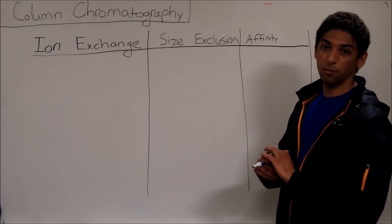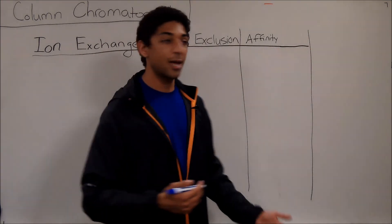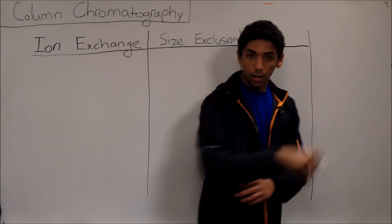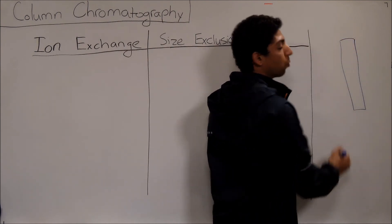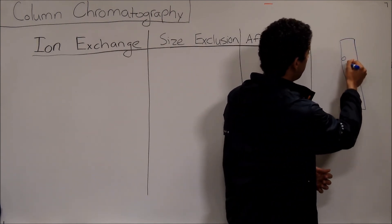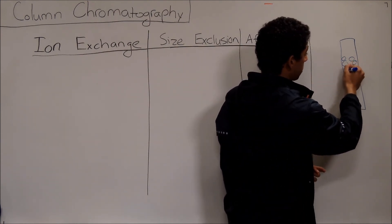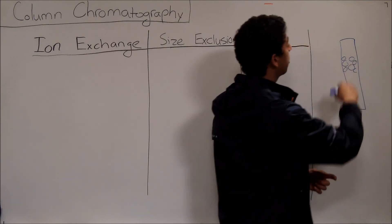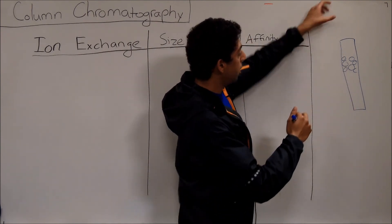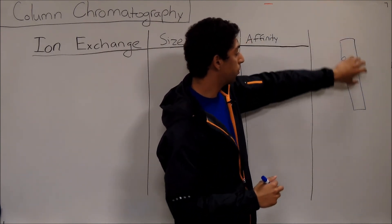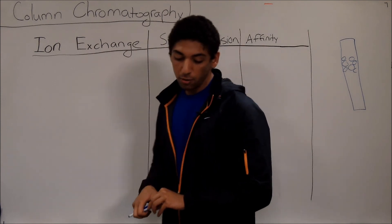Before we get started talking about the specific ways that we can do column chromatography, let's talk about what column chromatography actually is. You'll have, as the name would imply, a column with a lot of resin in it. Resin you can imagine to be like little marbles — really tiny small marbles, usually made out of silicone — that fill up the entire length of the column. You take the solution that has all of the mixed molecules in it and you pour it into the top of this column.